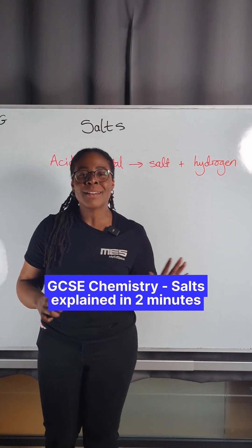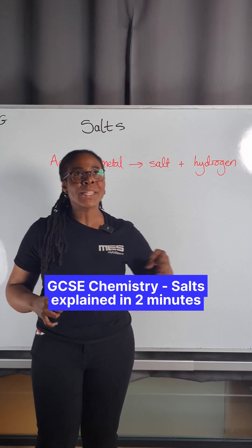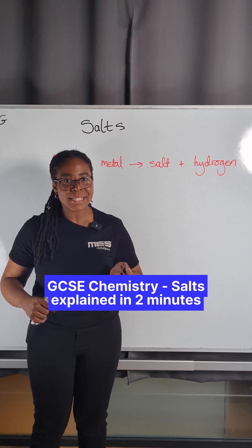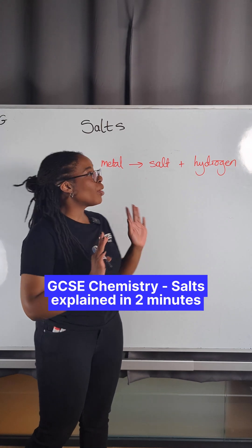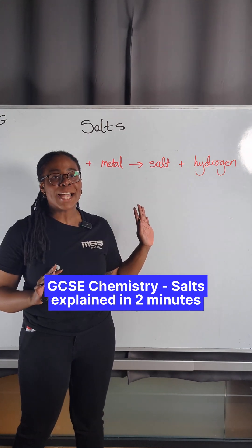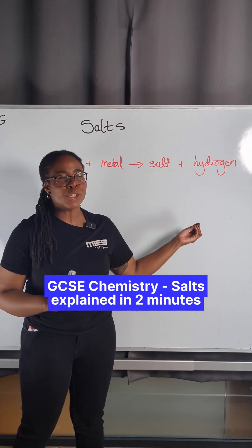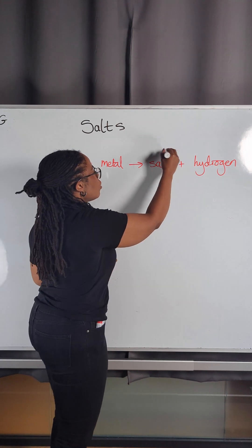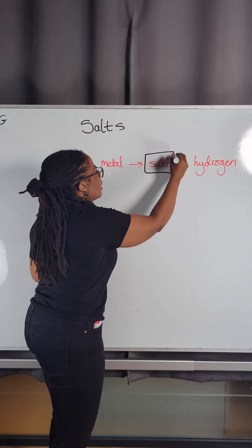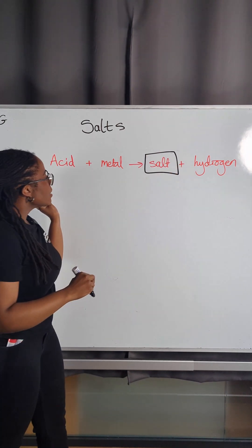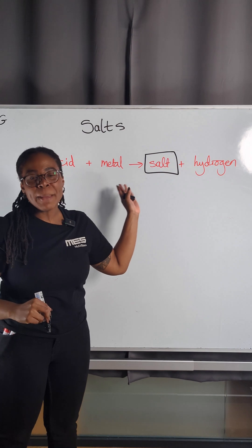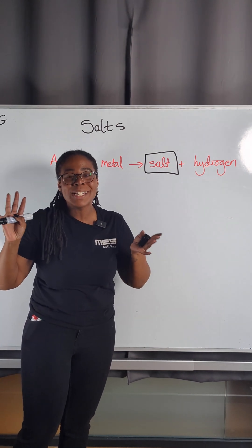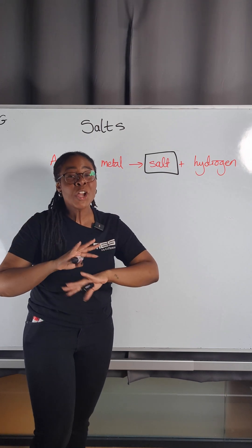GCSE chemists, in my last video we summarized the different reactions of acids and I promised I would come back to make sure we were super confident with what we meant by the term salt. So here's an example: acid and metal gives us a salt plus hydrogen — but again, what is a salt?